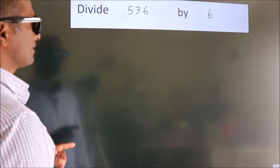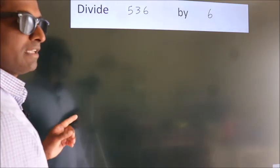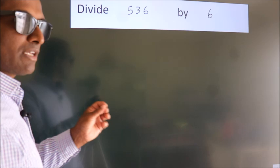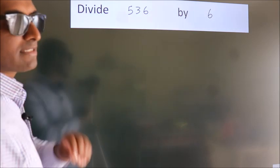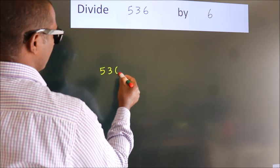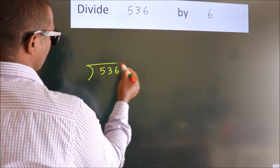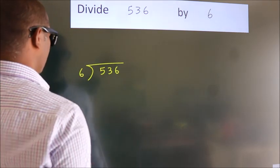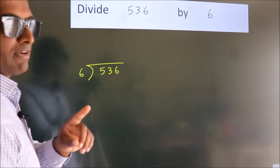Divide 536 by 6. To do this division we should frame it in this way. 536 here, 6 here. This is your step 1.